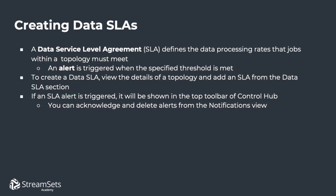Finally, you can configure a data processing rate level SLA. This allows an alert to be triggered when a specified threshold is met. If an SLA is triggered, it will be shown in the top toolbar of Control Hub, and these alerts can be acknowledged in the UI.